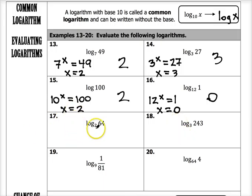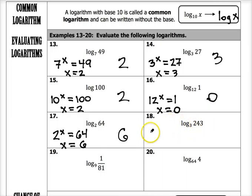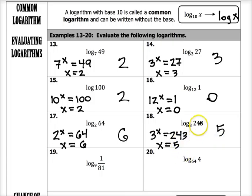Number 17: log base 2 of 64 — 2 to what power gives you 64? That would have to be the 6th power. 2 to the 6th is 64, so this answer is 6. Number 18: log base 3 of 243 — 3 to what power gives you 243? Your exponent would have to be 5, so log base 3 of 243 is equal to 5.